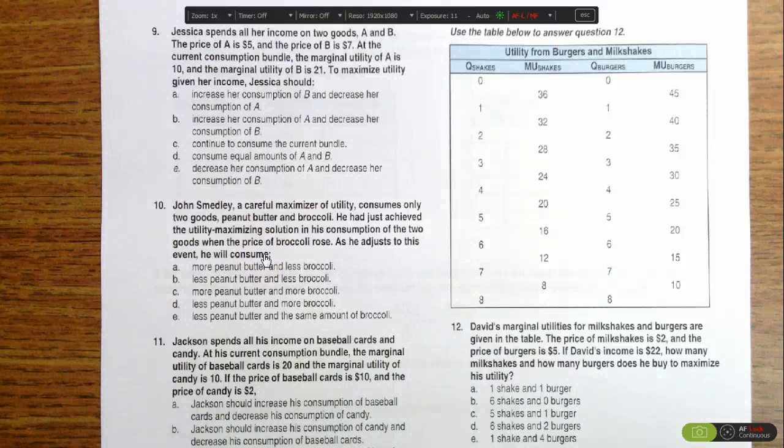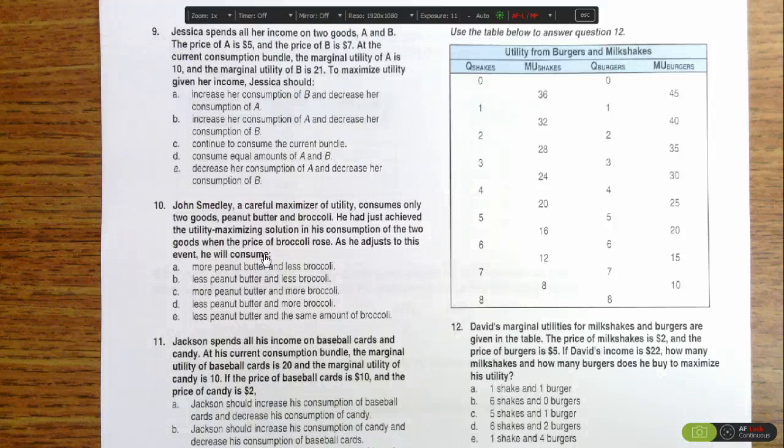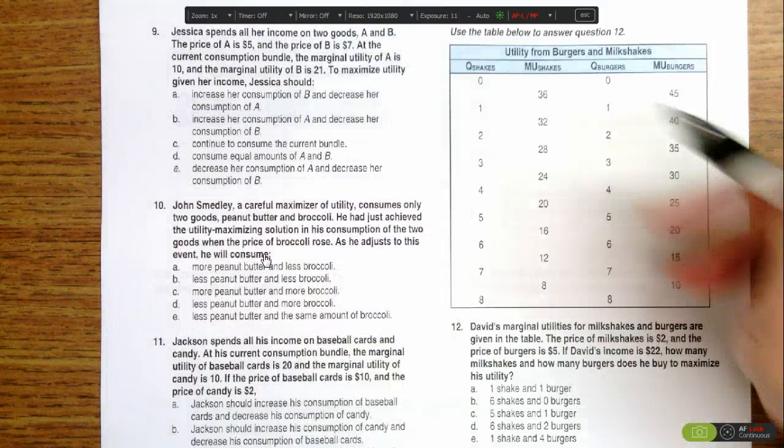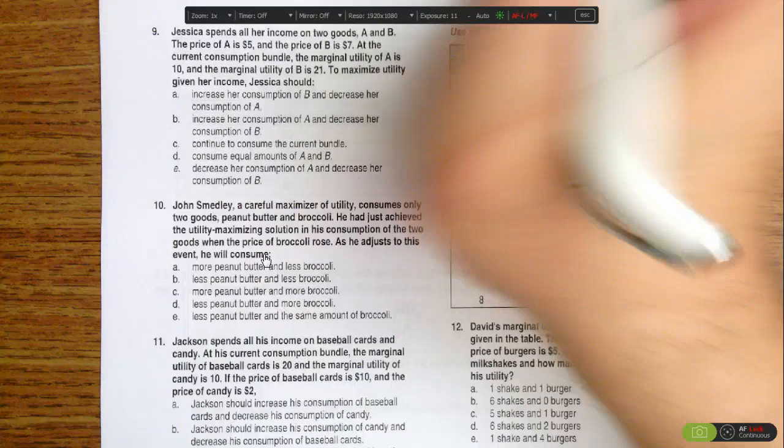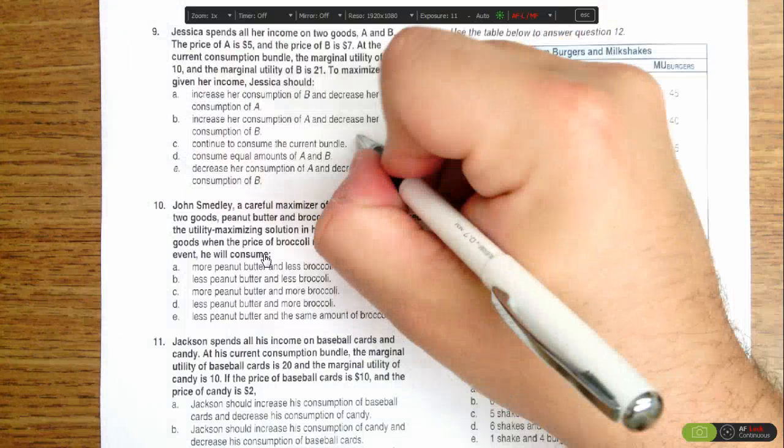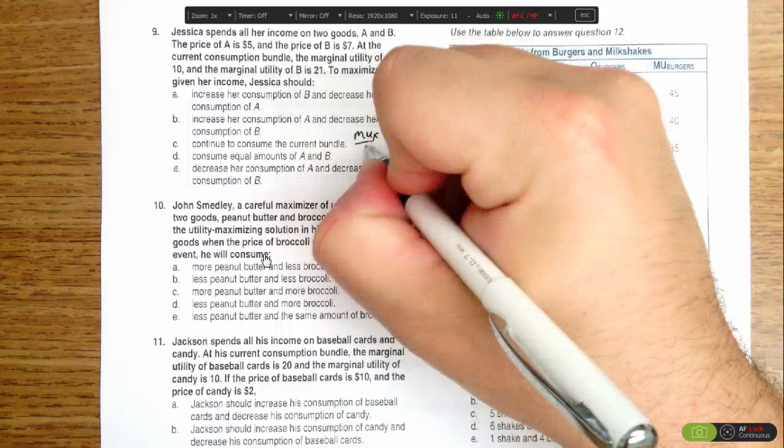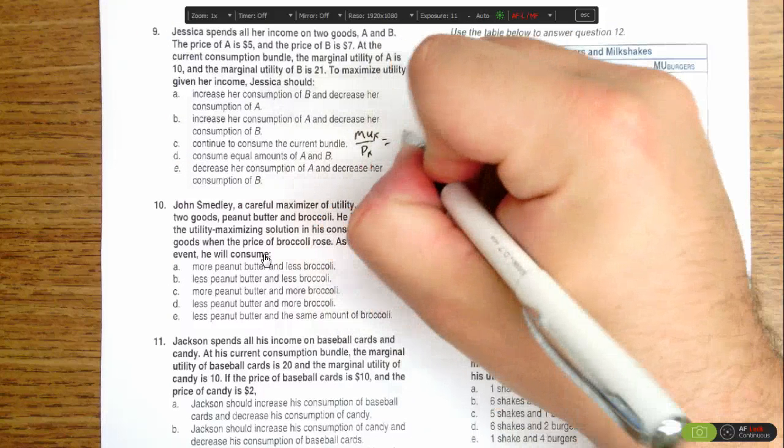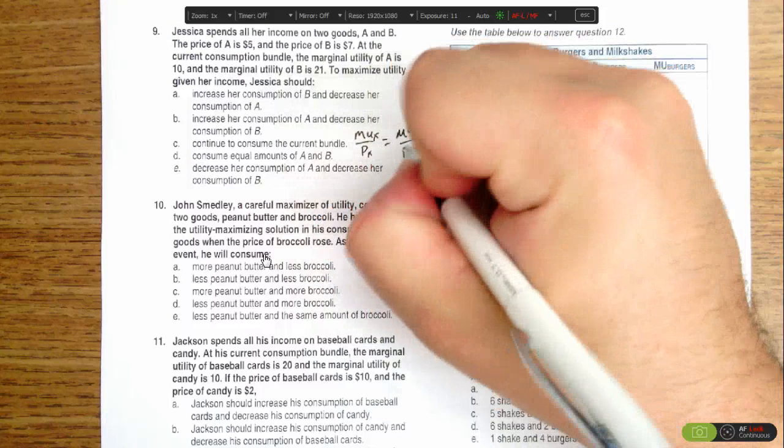This question asks us to identify what Jessica should do to her consumption based on the information provided. We're looking to make sure she's doing the optimal thing by checking her marginal utility per dollar spent, making sure they are equal between the two goods.